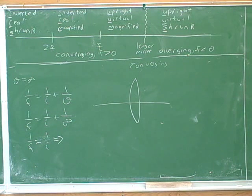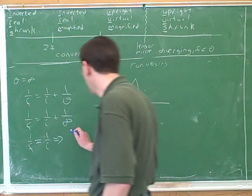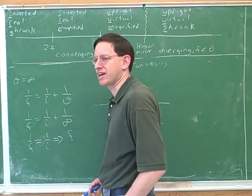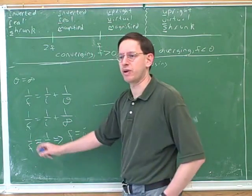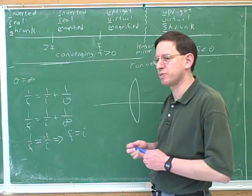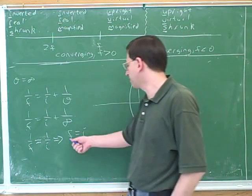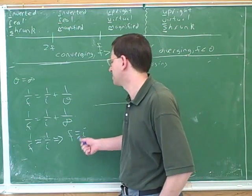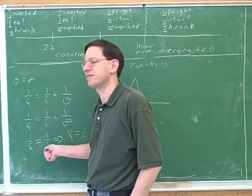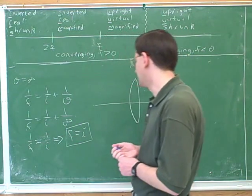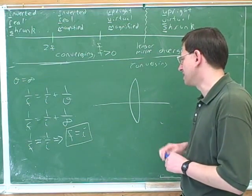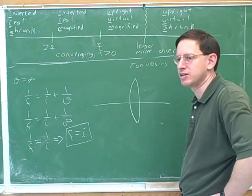Taking the reciprocal of the left-hand side gives f, and the reciprocal of the right-hand side gives i. So the simplified result is f = i. This confirms that the focal length equals the image distance when the object is at infinity.